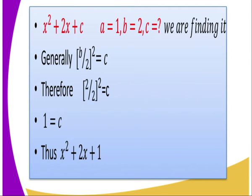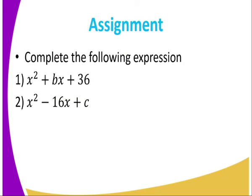Example 3: We have x² + 2x + c. Here a = 1, b = 2, and we need to find c. Since the coefficient of x² is 1, we use [b/2]² = c. So [2/2]² = c, which means c = 1. The completed equation is x² + 2x + 1.